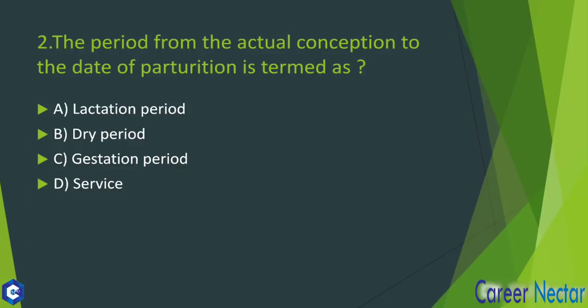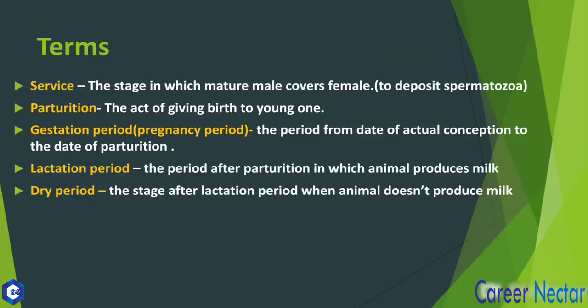The period from the actual conception to the period of parturition is called what? Parturition is the act of giving birth to the young one. The period from conception to the date of parturition is called the gestation period, which is also known as the pregnancy period.